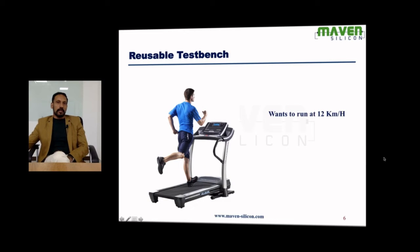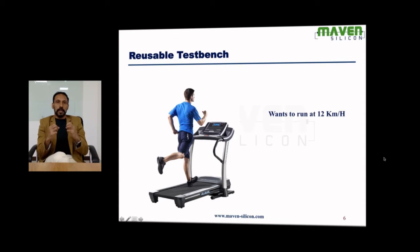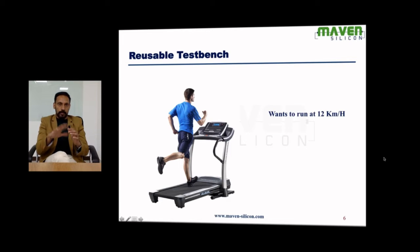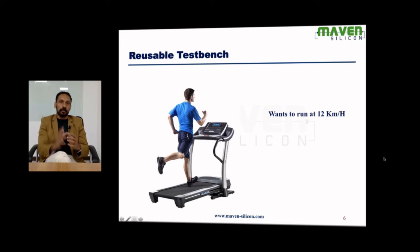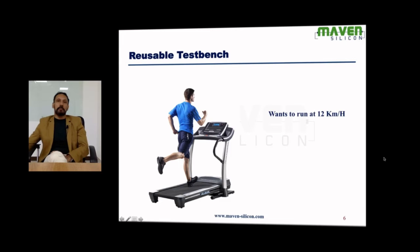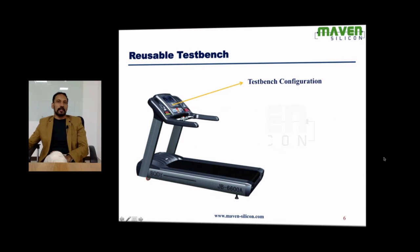In this scenario, he has been running regularly, so straight away he wants to run at 12 kilometers per hour. He wants to build stamina for marathons, and while running he wants to change the slope to simulate running on ups and downs. Three different people, different objectives, but everyone is using the same machine.